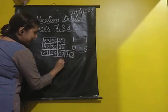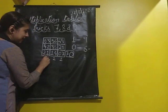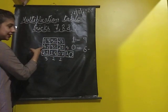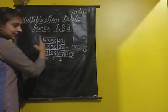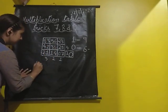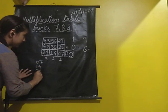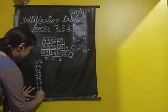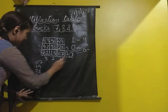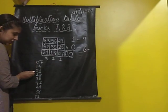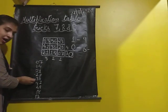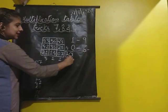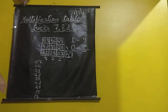Let's check: 7 times 1 is 7, 7 times 2 is 14, 7 times 3 is 21, 7 times 4 is 28, 7 times 5 is 35, 7 times 6 is 42, 7 times 7 is 49, 7 times 8 is 56, 7 times 9 is 63, and 7 times 10 is 70. Isn't it easy? I hope you have understood.